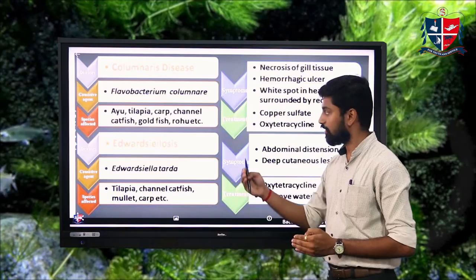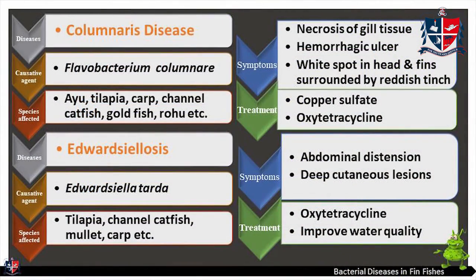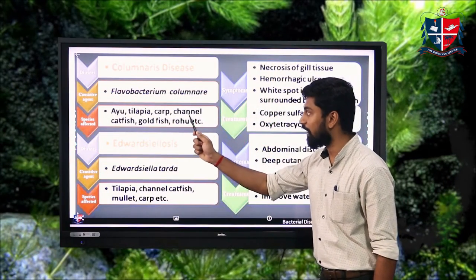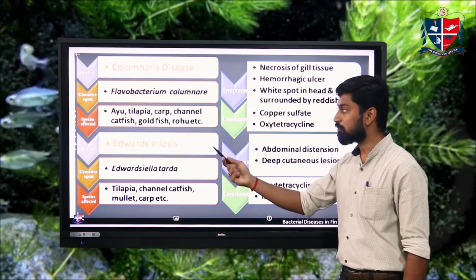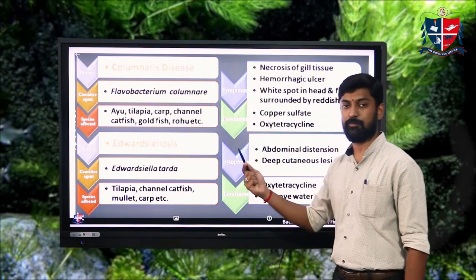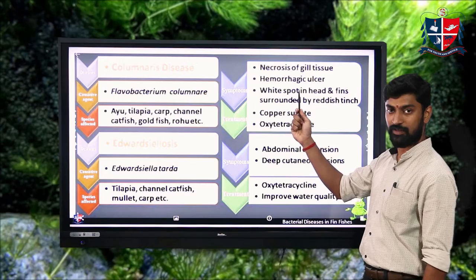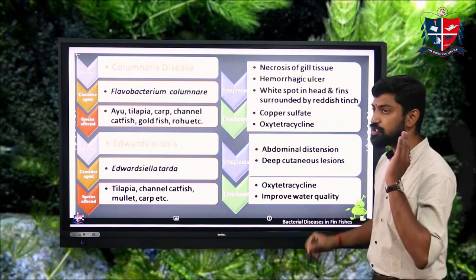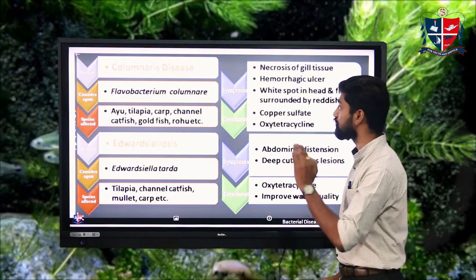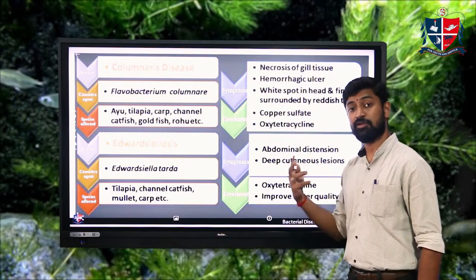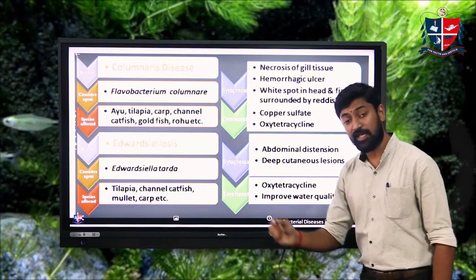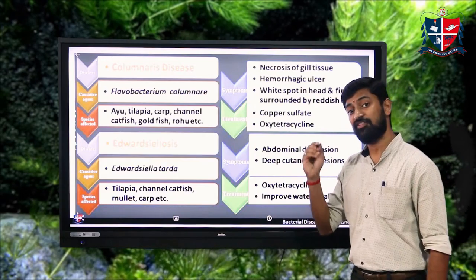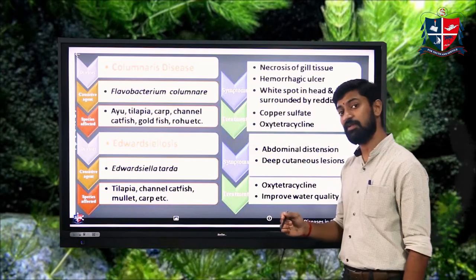One of the major bacterial diseases in aquaculture is columnaris disease. The causative agent is Flavobacterium columnare, which mainly affects freshwater fishes such as tilapia, channel catfish, goldfish, rohu, and ayu fish. Symptoms include necrosis of gill tissue, hemorrhagic ulcers in the gills leading to ulceration, and a spot on the head and fin surrounded by a red patch.